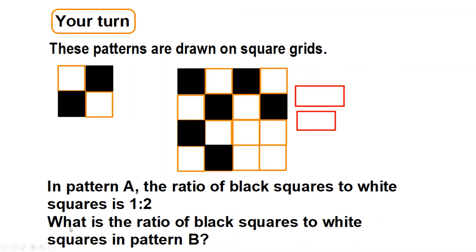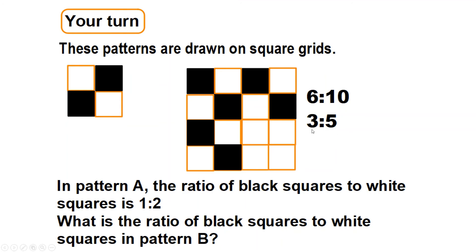Have a go at this one. Pattern A — actually it's one to one for that pattern. For this pattern: count the black squares — one, two, three, four, five, six — there are six. Then count the other squares: one through ten — there are ten. So the ratio is six to ten. Simplify that and you get three to five. The ratio is for every three black squares there are five white squares.